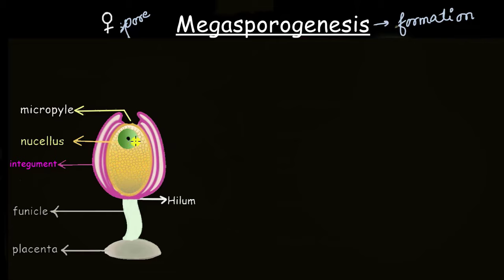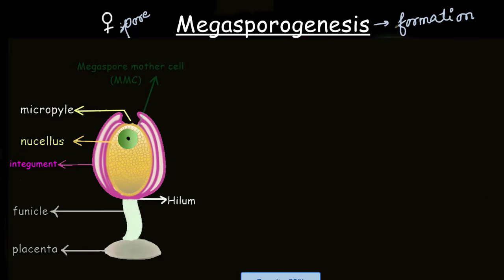This enlarged cell is not a megaspore yet — it is just an ordinary cell that has increased in mass and accumulated a lot of cytoplasm. It will undergo a number of cell divisions to give rise to megaspores. Since this cell will be responsible for giving rise to megaspores, we call it the megaspore mother cell, or MMC.